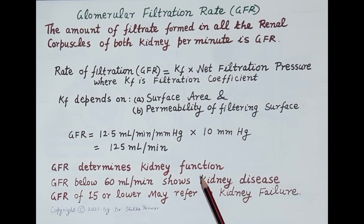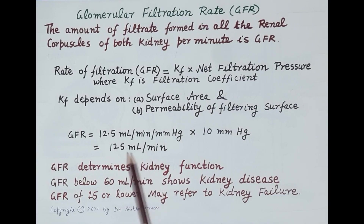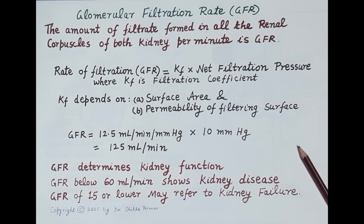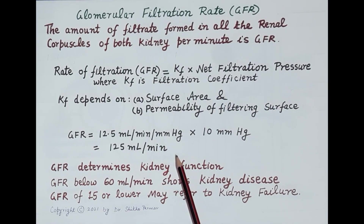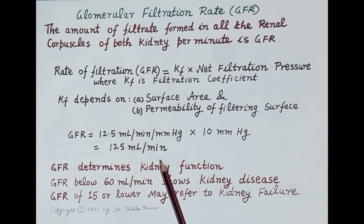A GFR of 125 ml per minute is the filtration rate seen in a healthy kidney. In this video we have discussed the structure of the renal corpuscle, the process of glomerular filtration, and derived and determined the value of the glomerular filtration rate. If you find the video useful, please like, subscribe, and share. Thanks for watching.